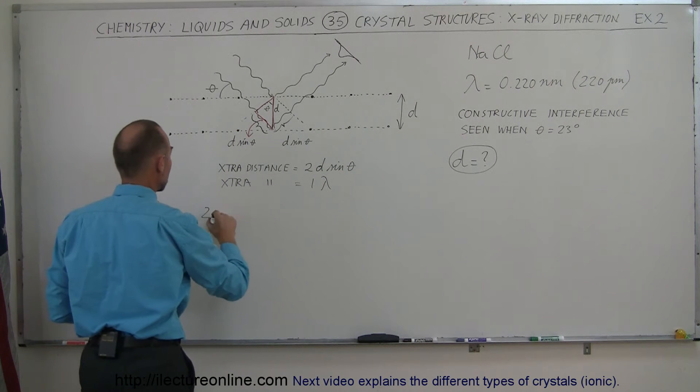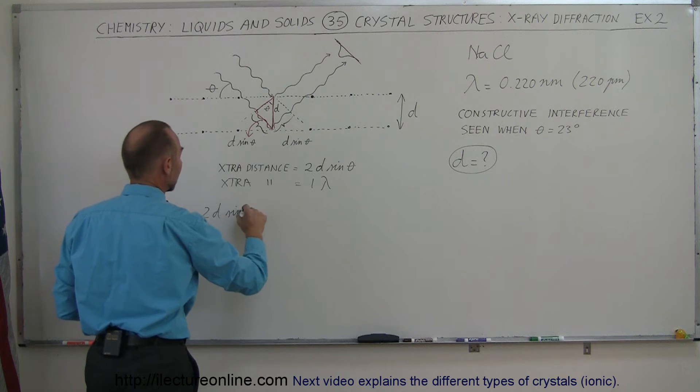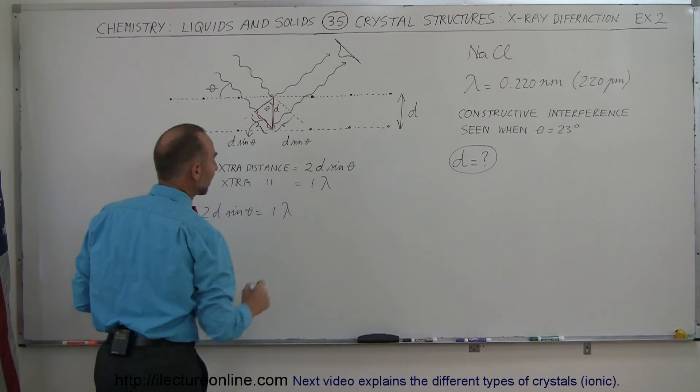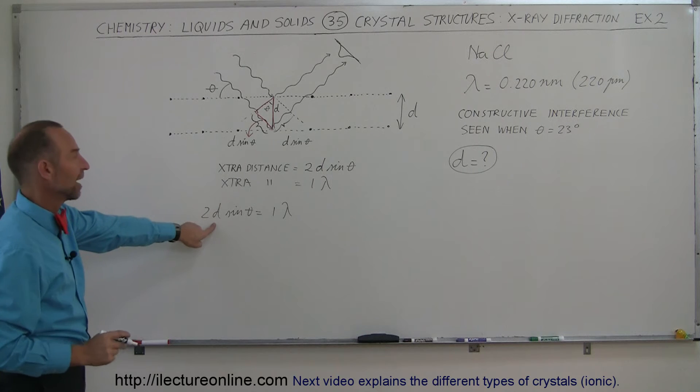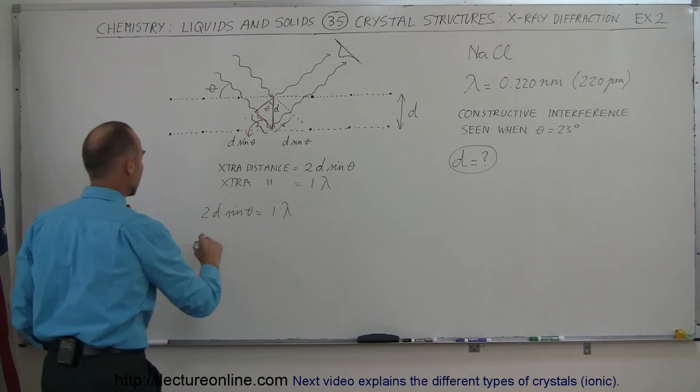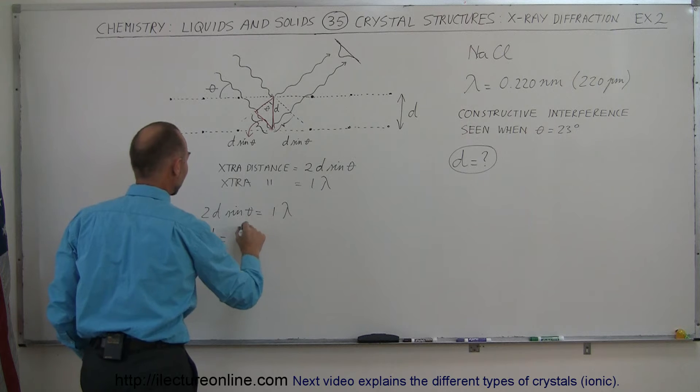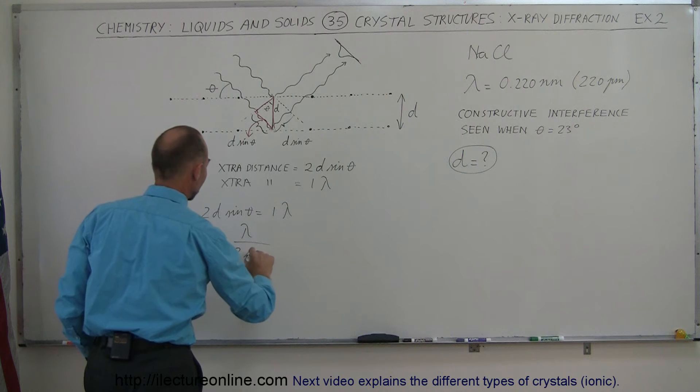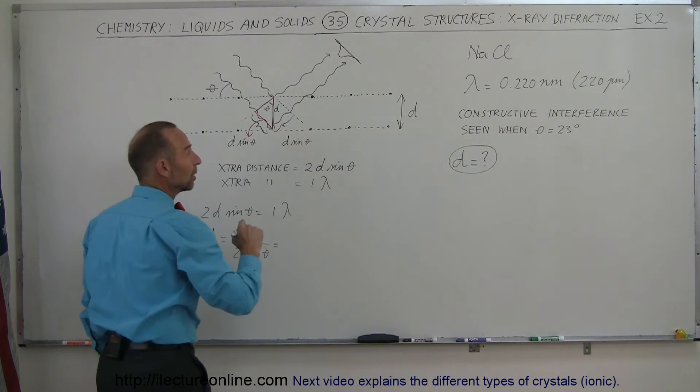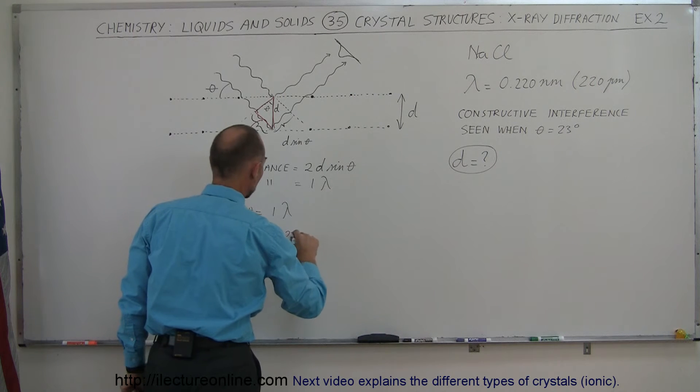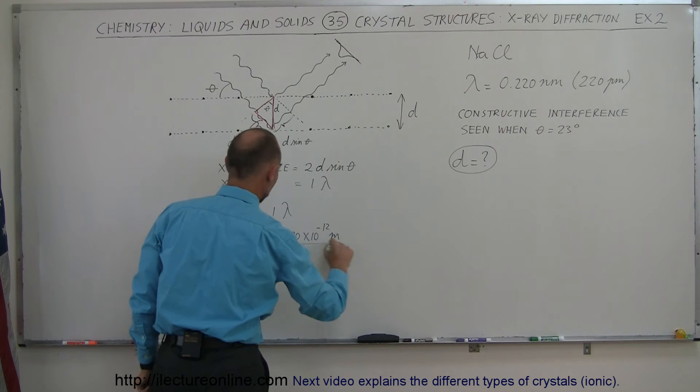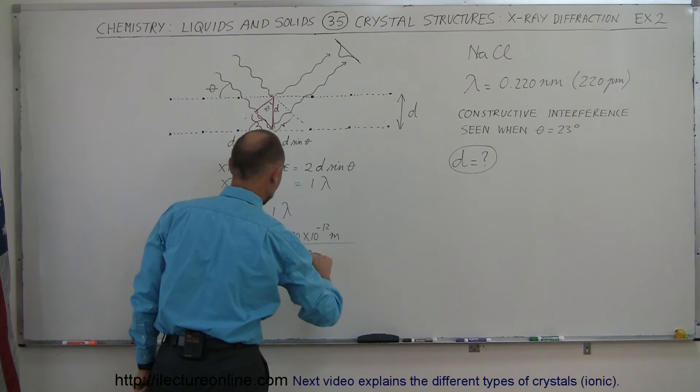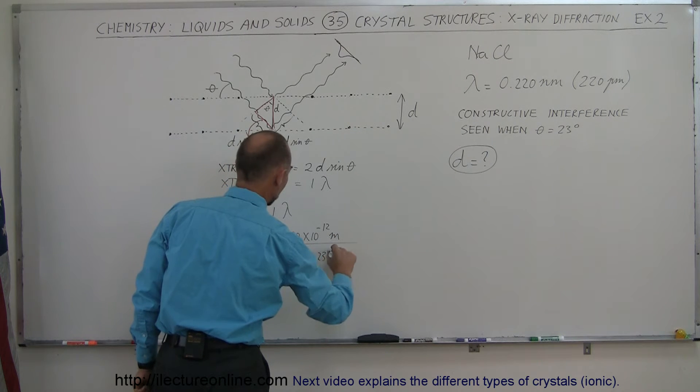So we set those two equal to each other. We have 2d sine theta is equal to one full wavelength of the x-rays beaming onto the crystal. We're trying to find the separation distance d, which means that d is equal to the wavelength divided by 2 times the sine of the angle theta. The wavelength we're using is 220 picometers,